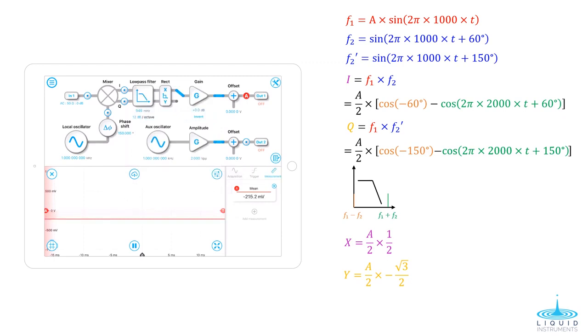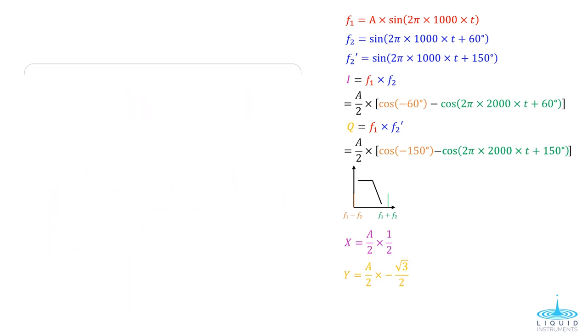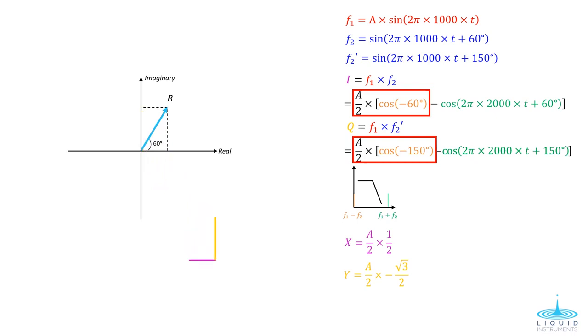How does this dual-phase demodulation help? Let's imagine we have a signal with amplitude R, shown in this phasor plot. By multiplying the signal with cos 60 and cos 150, we effectively project the R onto the real and imaginary axes. The projections in the signal form a right-angle triangle, as shown.